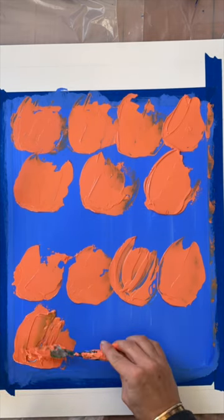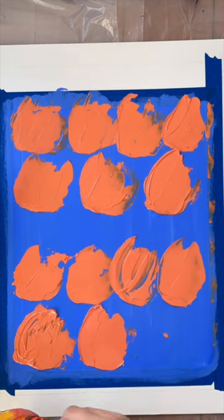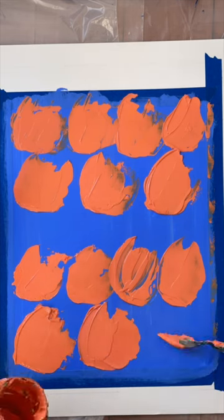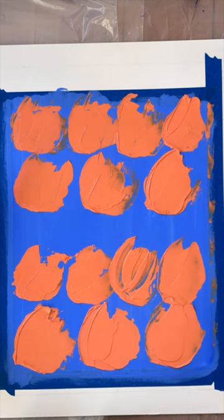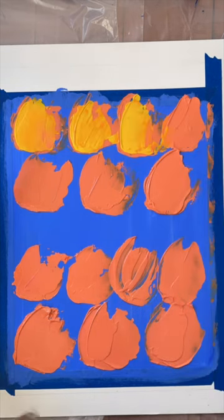Once the peach is down, we are going to use an analogous color, yellow. The yellow would be juxtaposed to the peach on the color wheel. They are in the same color family.